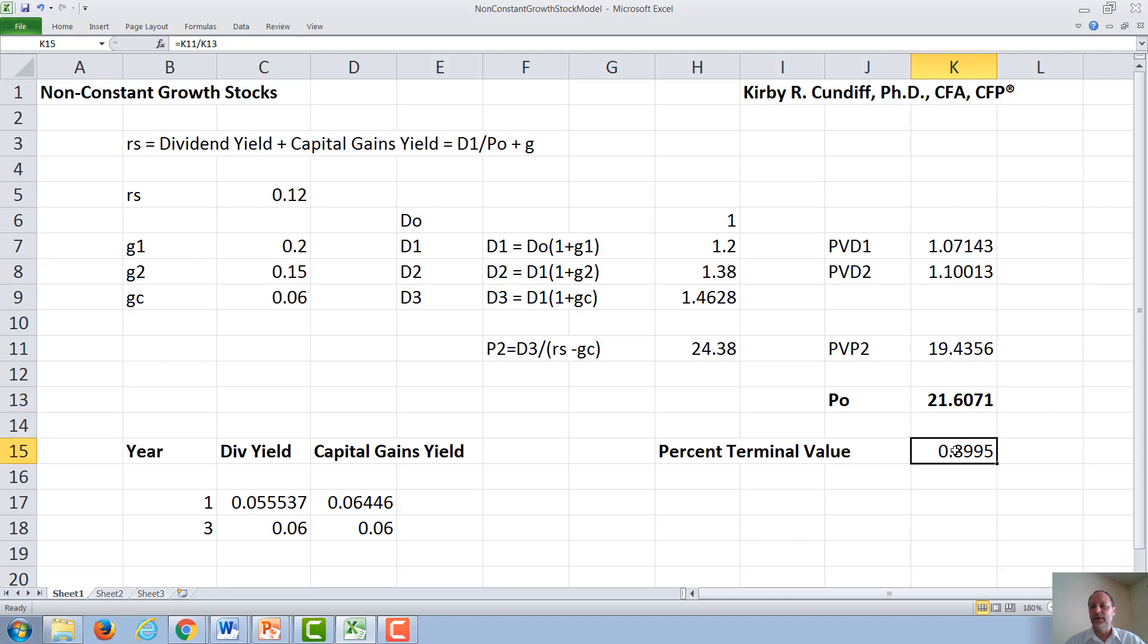Most of this value comes from the terminal value. So if we take 19.44 divided by 21.61, we get close to 90%. So the long-term growth prospects of the stock are very important to its valuation.